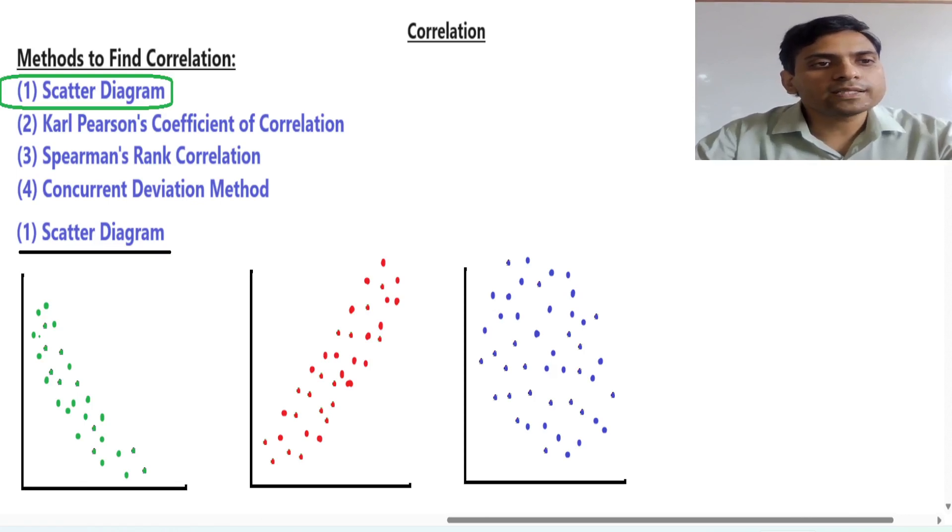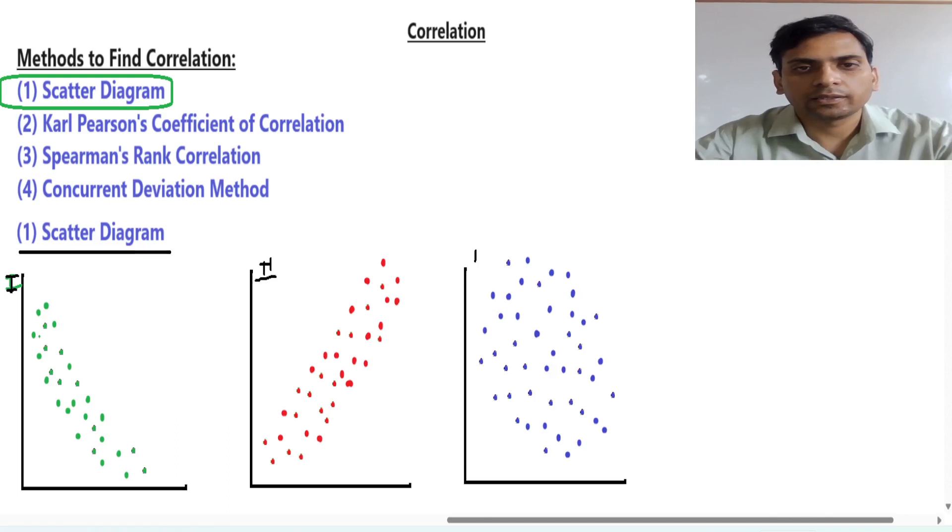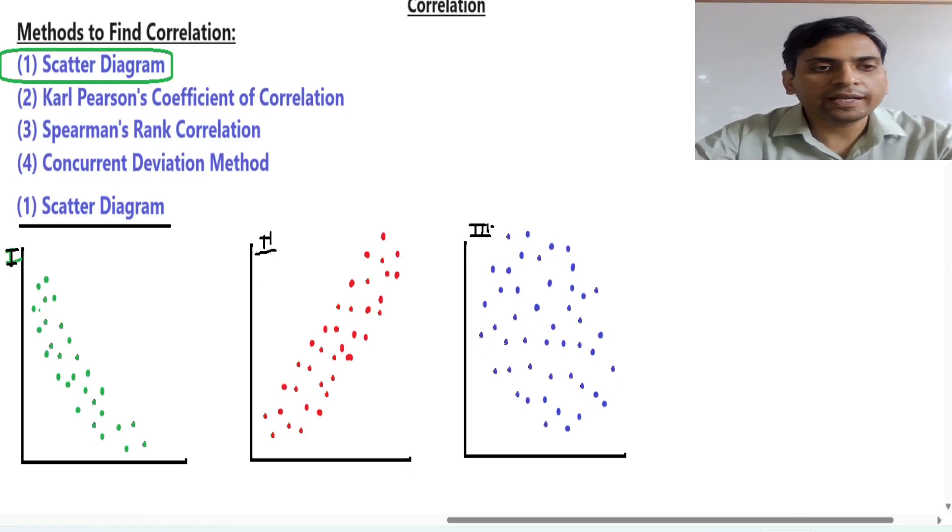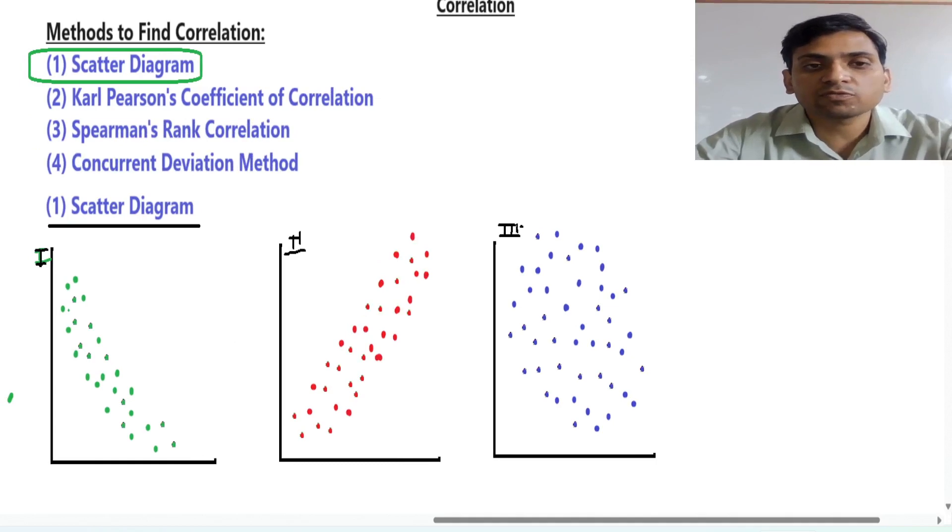For this scatter diagram we have three situations. This first one, this is second, and this is third. As I taught in my previous lecture, if the data has an increasing pattern then there is positive correlation. If this has a decreasing pattern there is negative correlation.